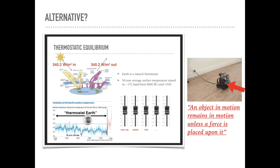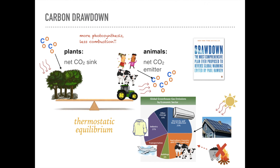So what's the other option? We go back to thermostatic equilibrium — stop emitting CO2 and remove the CO2 already in the sky, putting it back into the earth using plants. An object in motion remains in motion unless a force is placed upon it; this isn't going to stop by itself. When people ask what's the best thing you can do to combat climate change, there are all kinds of carbon drawdown approaches. There's the book Drawdown, there are many plans, we have all the technology ready — solar energy instead of fuel, ways to reduce CO2. The technology has been around for a long time.